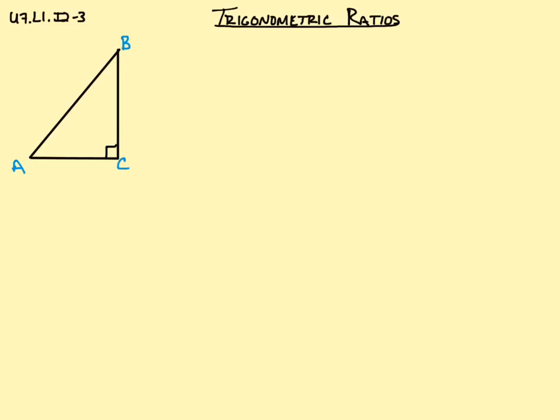So if I look at capital A, the side opposite that is going to be this side, and we'll call that little a. And the side opposite big B is down here, and we'll call that little b. And the side opposite C is little c.